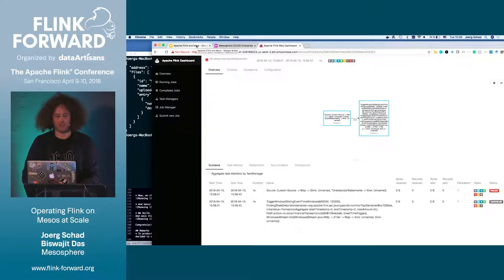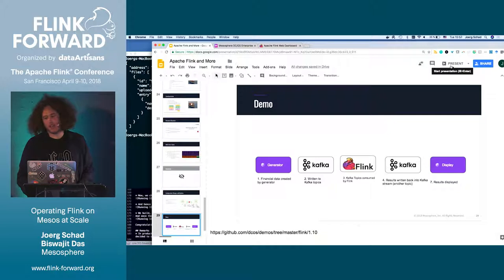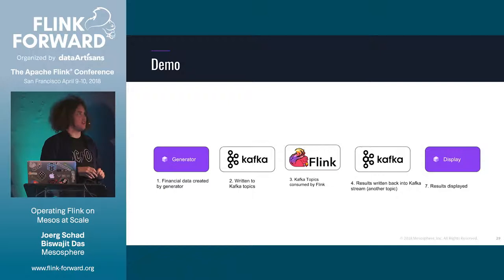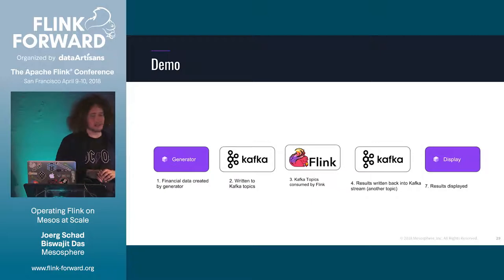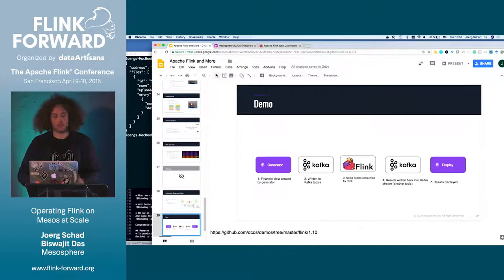The idea of this demo is to filter transactions to detect money laundering. A generator creates transactions transferring money from account A to account B, written into a Kafka pipeline, picked up by Flink, which writes results into another Kafka pipeline, and then a display shows the output. We still need to deploy Kafka, the generator, and the display. From the CLI: 'dcos package install kafka'.